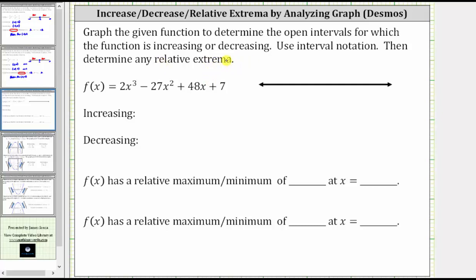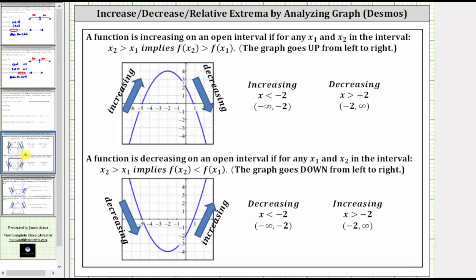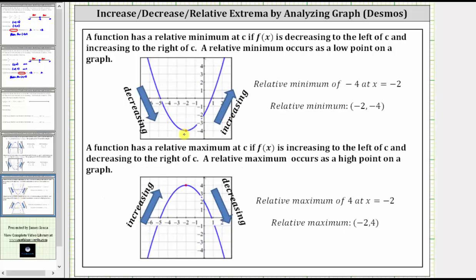For a quick review, if we read a graph from left to right: if the graph is going uphill, the function is increasing; if the graph is going downhill, the function is decreasing. If we have a low point where a function changes from decreasing to increasing, we have a relative minimum. And if we have a high point where a function changes from increasing to decreasing, we have a relative maximum.